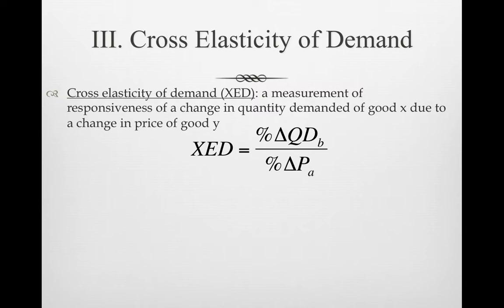We're actually looking at how much demand changes for a different good in response to the price change of a related good. You may recall from supply and demand that if the price of a substitute good — like an Xbox One — goes up, the quantity demanded for the Xbox One drops. Consequently, people will buy less Xbox Ones, and there will be a shift in the demand curve for PS4s, the substitute good. Cross elasticity of demand measures how much of that shift we get — how good of substitutes the two goods are.